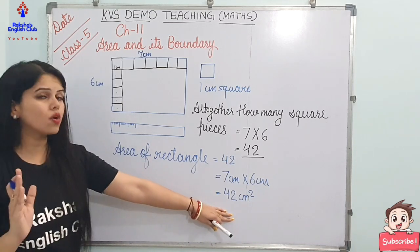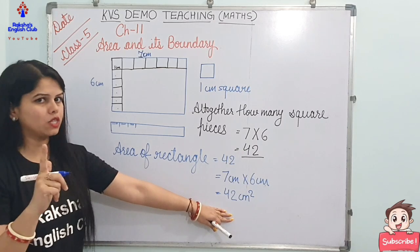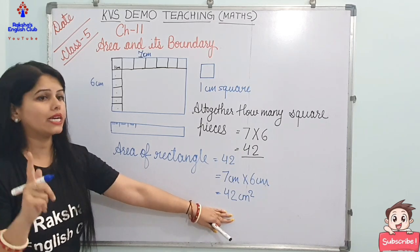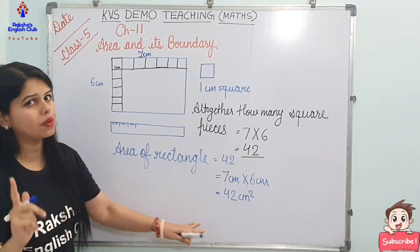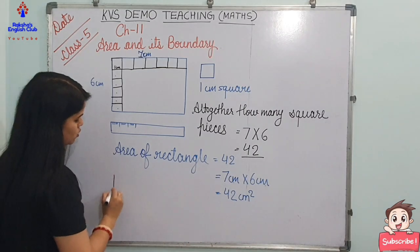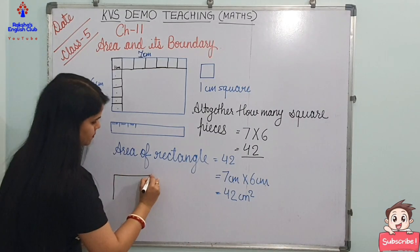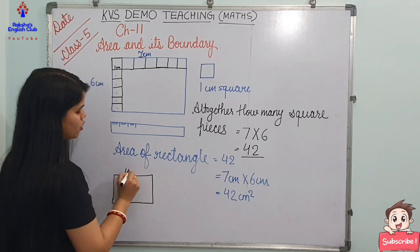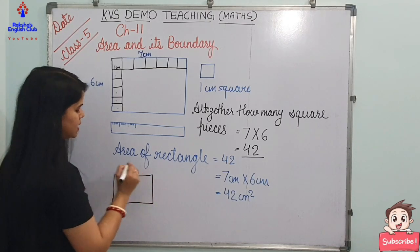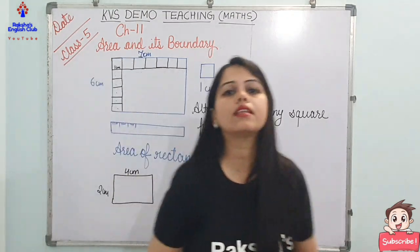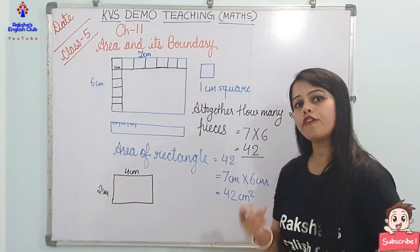Now I am going to give you one more piece of paper. You have to calculate the area of this piece of paper also. This is the piece of paper left with me, and its length is 4 centimeter and the breadth is 2 centimeter. Come on, quickly calculate the area of the rectangle.